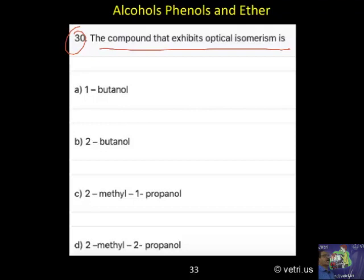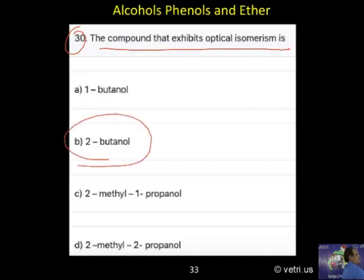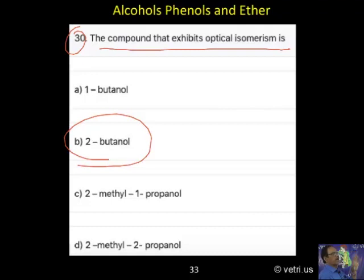To be optically active, the condition I have already given is that an asymmetric carbon atom should be present. You have to find out which case has an asymmetric carbon atom — that is 2-butanol. All 2-substituted functional group compounds will be optically active.